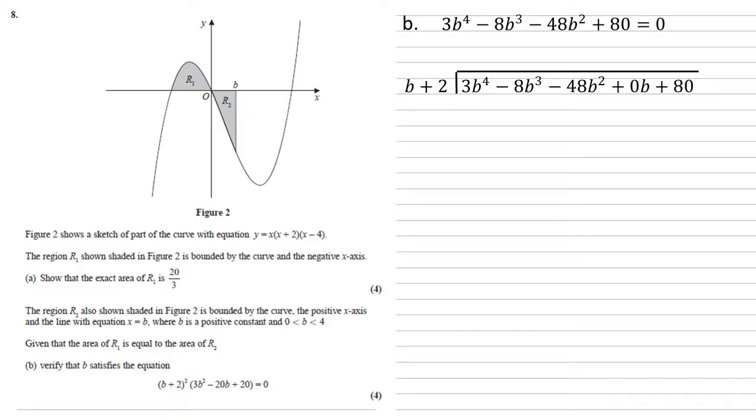So we're going to look at how many times that b goes into the first term, 3b to the power of 4. Well, that would be 3b cubed. Underneath, we write 3b cubed times by the b plus 2. So 3 times b to the 4 plus 6b cubed. And we take that away from our top line. So minus 8b cubed minus the 6b cubed gives us minus 14b cubed. And the other terms just come down. We now repeat that.